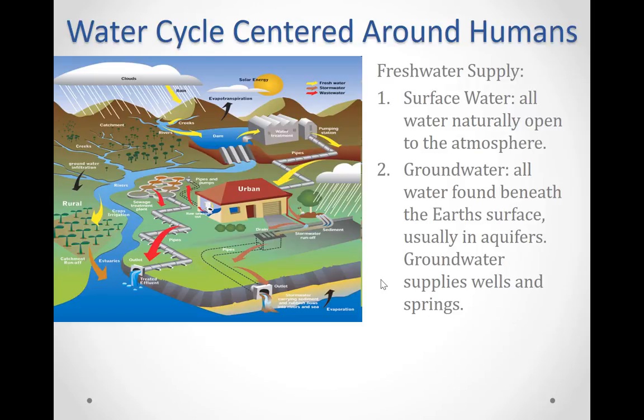Surface water may be considered suitable for agriculture, industrial, or recreational uses with no or limited treatment. Different criteria are therefore developed and applied to source waters depending on their ultimate use. Surface waters used as drinking water sources are regulated by far stricter criteria, for example, than waters used to irrigate crops.